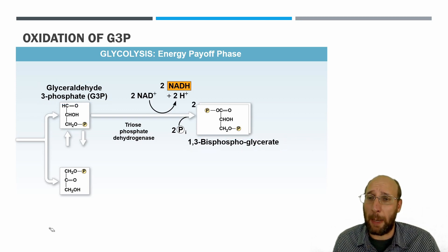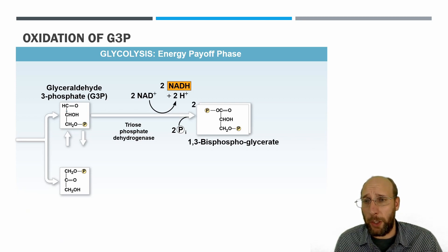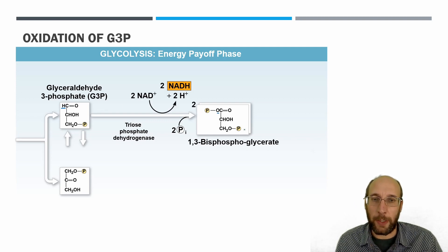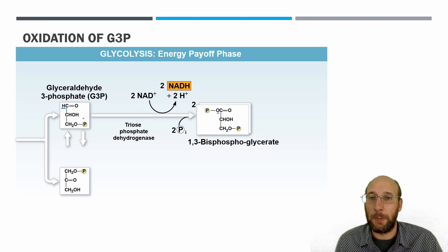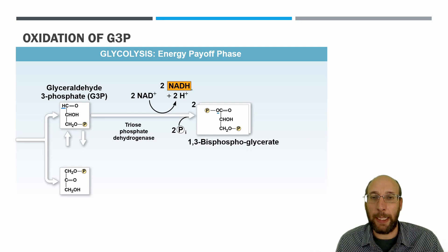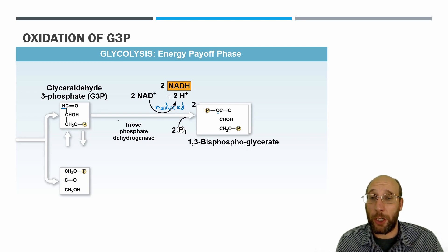There are a couple of ways to see what's happening. Looking at the structural change, the carbon goes from having a hydrogen attached to having an oxygen — oxygen is electronegative, so it changes the sharing of electrons and carbon loses electrons to oxygen, becoming oxidized. Alternatively, follow the hydrogens: NAD⁺ becomes NADH, gaining a hydrogen and therefore gaining electrons — it's reduced — while G3P loses that hydrogen along with electrons and gets oxidized.